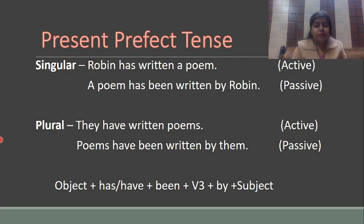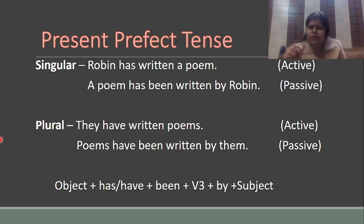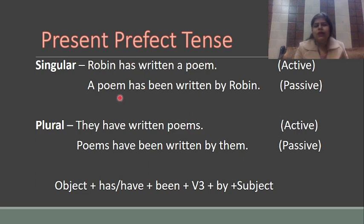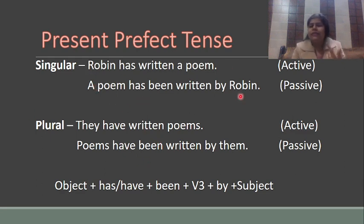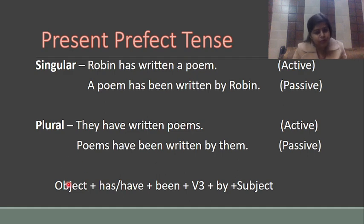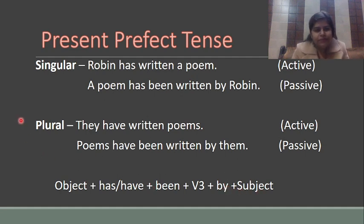Present perfect tense — something has been perfectly done in the present. 'Robin has written a poem' — passive: 'A poem has been written by Robin.' For plural: 'They have written poems' — 'Poems have been written by them.' Use 'has been' for singular and 'have been' for plural, according to the object. Structure: Object + has/have + been + verb third form + by + subject.